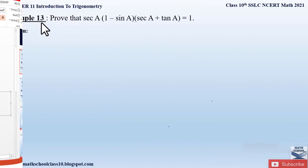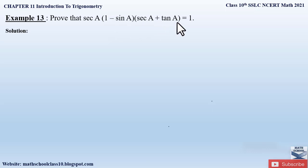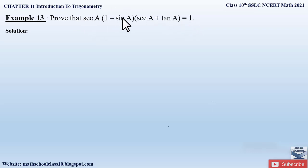Example 13 from Chapter 11 Introduction to Trigonometry says: prove that sec A into (1 minus sin A) into (sec A plus tan A) is equal to 1. So here we have to prove the left hand side equal to 1. We have three trigonometric functions: secant, sine, and tan.